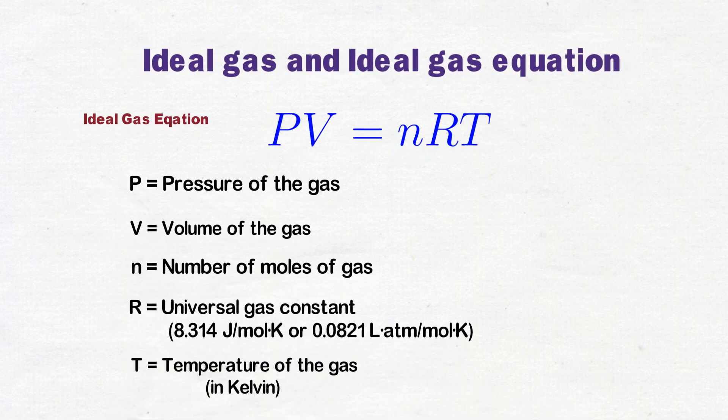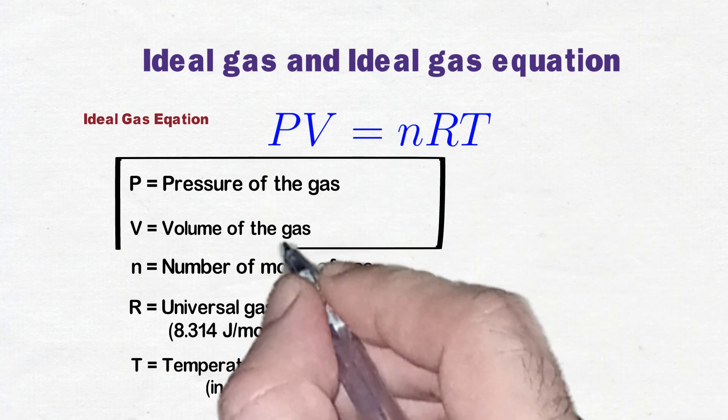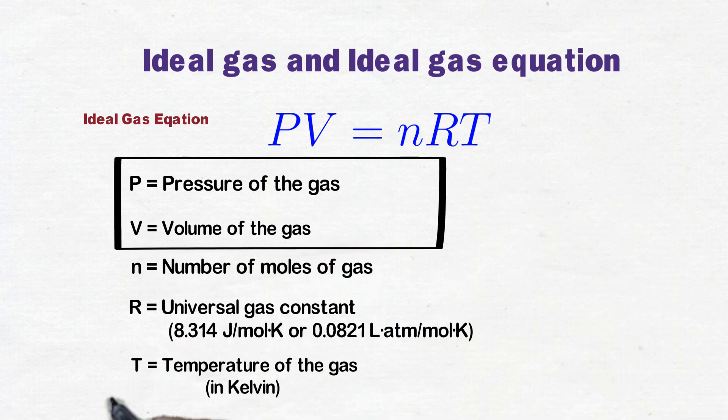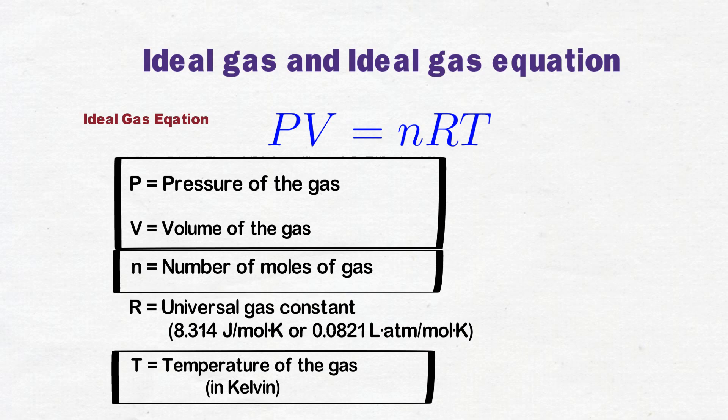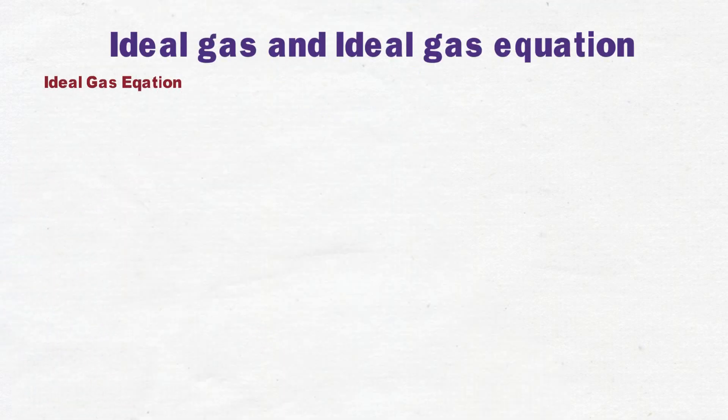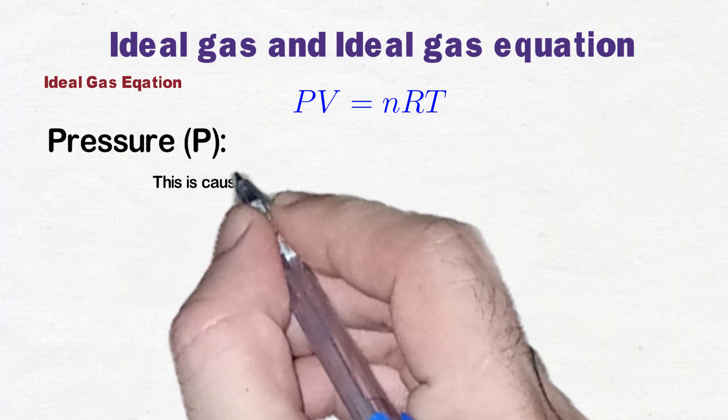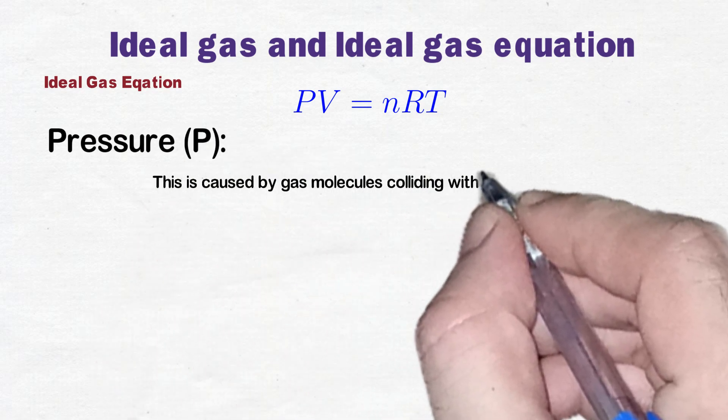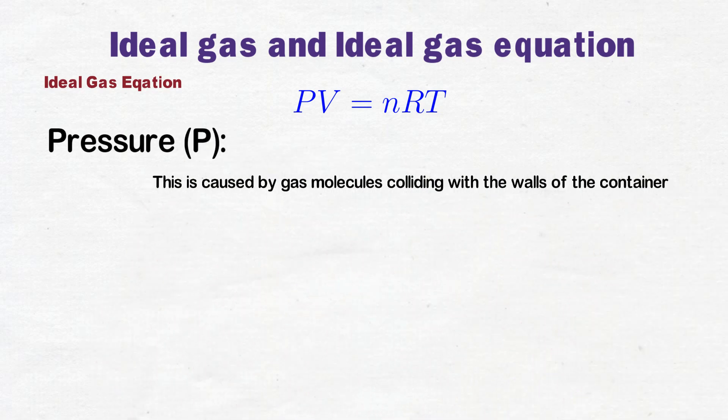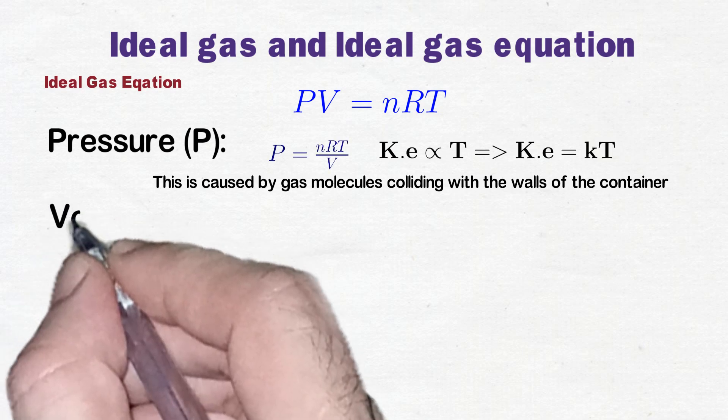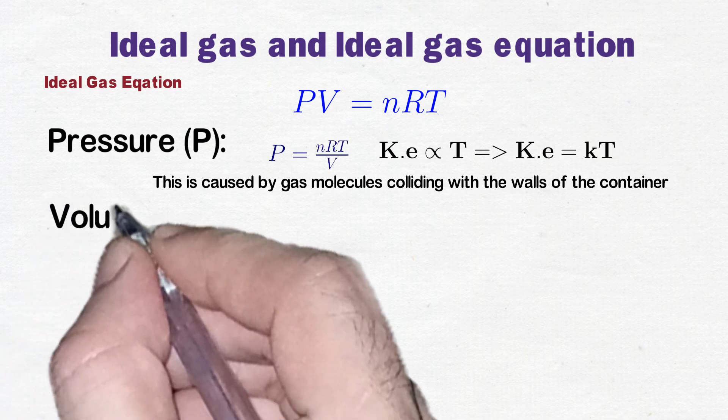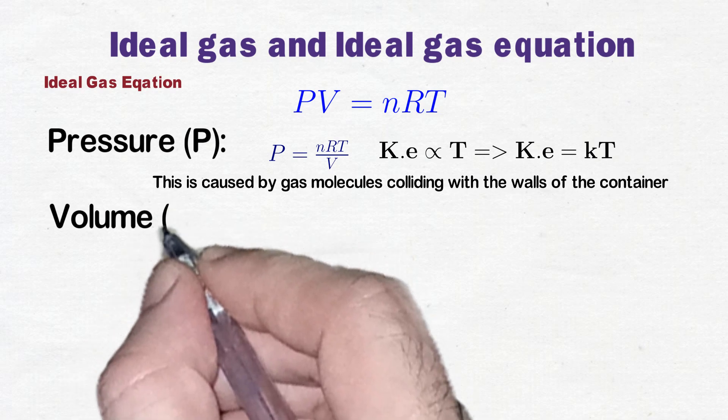Ideal gas equation ties together four key properties of gas: pressure, volume, temperature, and amount of gas. Here is how each component plays a role. Number one, pressure: this is caused by gas molecules colliding with the walls of the container. As the temperature increases, the kinetic energy of the molecules increases, leading to more forceful collisions and higher pressure.